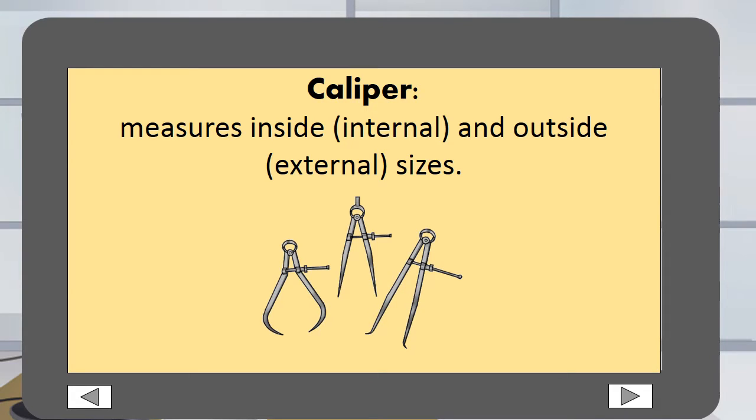Caliper has two legs and is used to measure inside, internal and outside, external sizes.